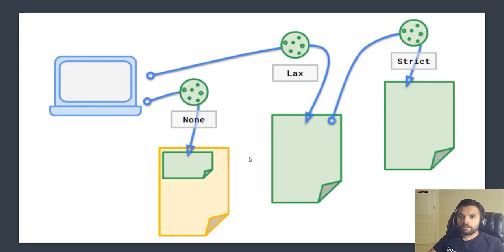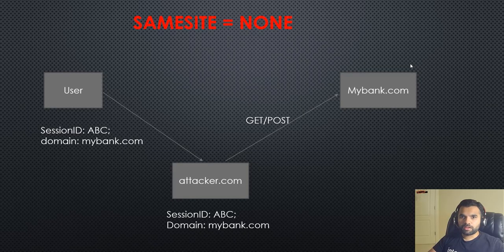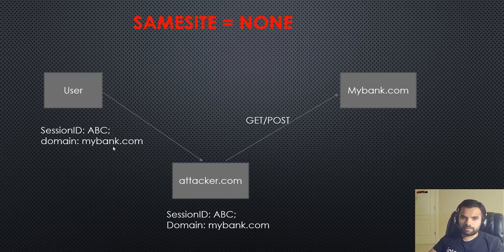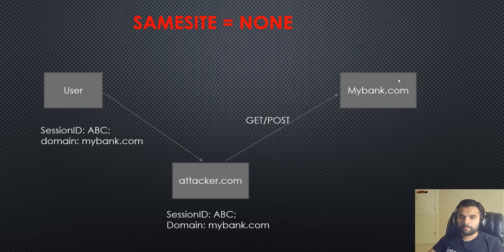There are three flavors of SameSite: None (the default), Lax, and Strict. Starting with None — the default behavior: a user logs into mybank.com, the bank gives a session ID like 'ABC' with domain set to mybank.com. When the attacker (via phishing or something similar) sends a GET request to mybank.com, the browser attaches the mybank session ID 'ABC' and the request succeeds — irrespective of whether it's a GET or POST request. That's the basic behavior and that's the CSRF issue — the browser is attaching the session ID when it shouldn't.